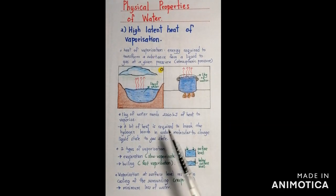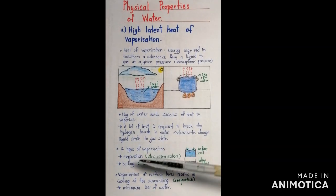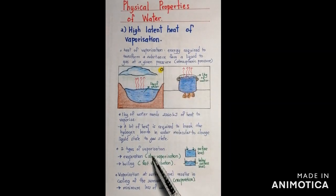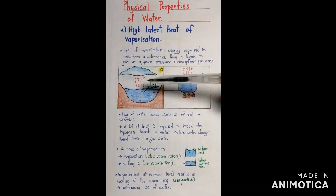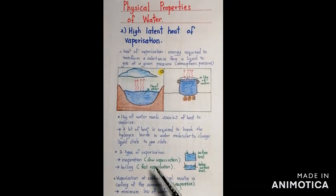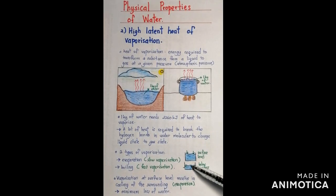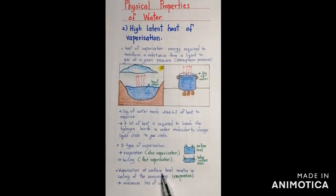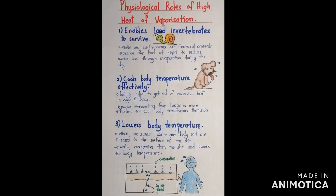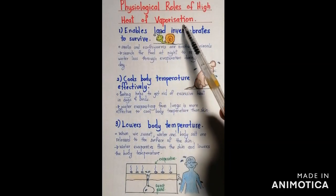There are two types of vaporization: evaporation, which is slow vaporization occurring at the surface level of water, and boiling, which is fast vaporization occurring below the surface level. Vaporization at the surface level results in cooling of the surroundings and also minimum loss of water.